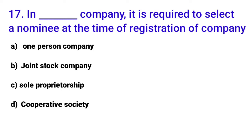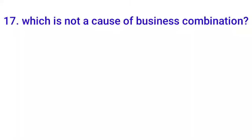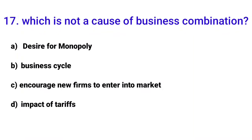Eighteenth MCQ: 'Which is not a cause of business combination?' Business combination is when two or more companies combine to earn profits. There are many causes. Options include: desire for monopoly — monopoly means one seller controlling the market, which is a cause. Business cycle — profits and losses fluctuate, so combining with other businesses helps cover losses, also a cause.